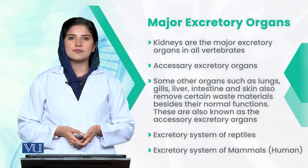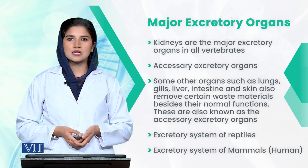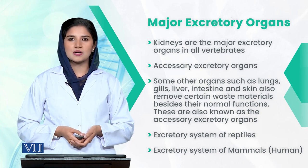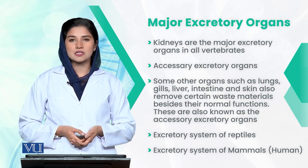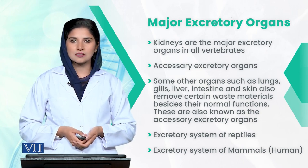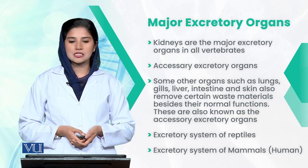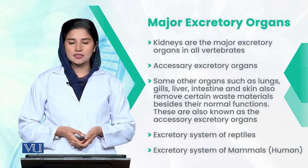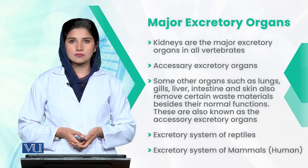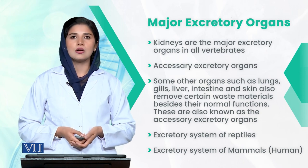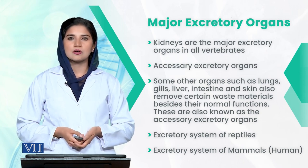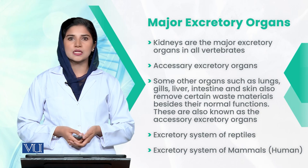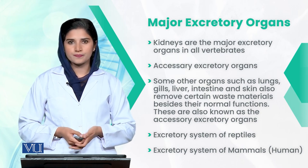Other than kidneys, different excretory glands are present in vertebrates — for example, lungs, gills, liver, intestine, and skin. They all work together along with the kidneys to remove excretory waste from the body.